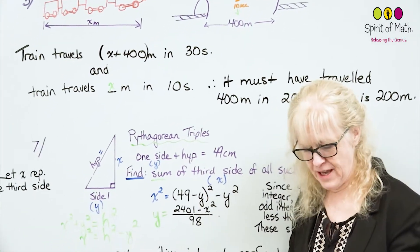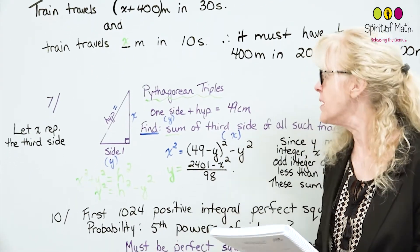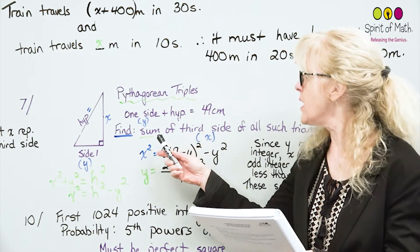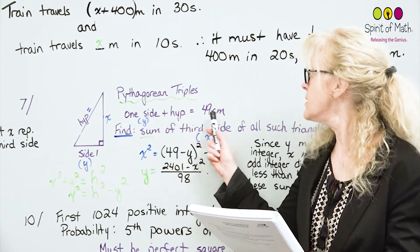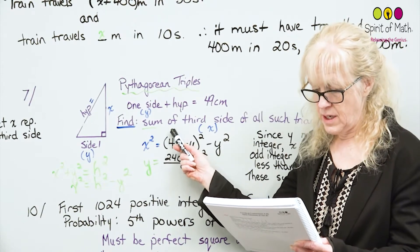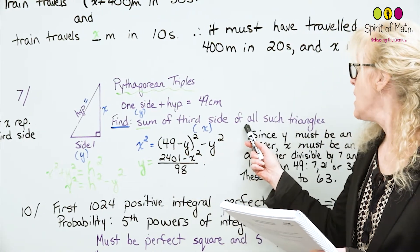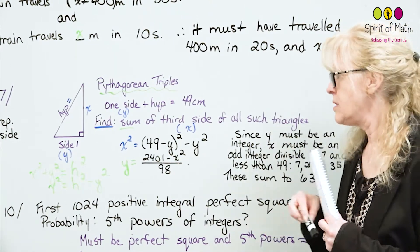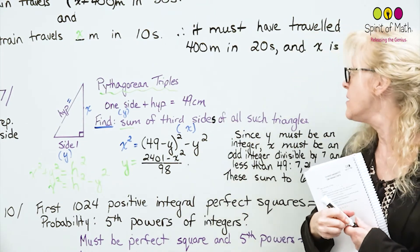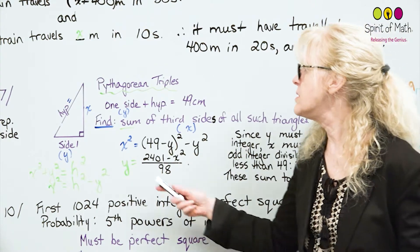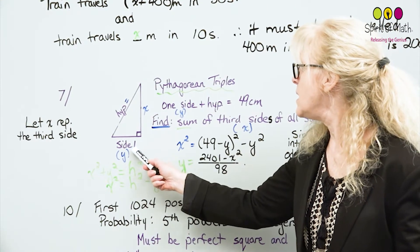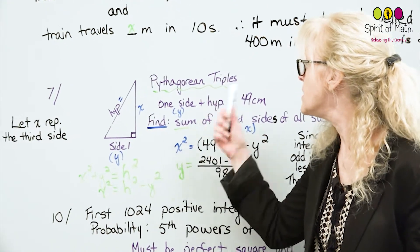Number seven says the sides of a certain right triangle are Pythagorean triples. In some such triangles the sum of one side of the triangle plus the hypotenuse is equal to 49 centimeters. Find the sum in centimeters of the lengths of the third sides of all such triangles. Let x represent the third side and y represent the side such that y plus the hypotenuse equals 49 centimeters.